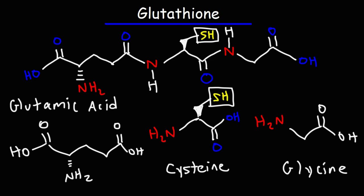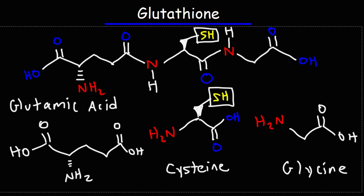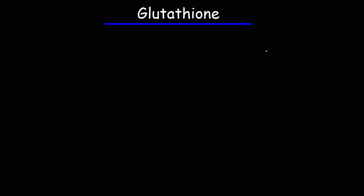Glutathione can be abbreviated as GSH. G is everything outside of the thiol group. The SH part is the thiol group.